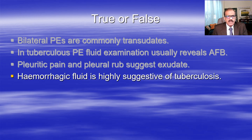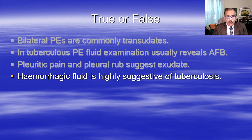Hemorrhagic fluid is highly suggestive of tuberculosis - true or false? No, this is not true. If there is frankly hemorrhagic fluid, I would suspect mostly malignancy, and maybe pulmonary infarction. Tuberculosis fluid is typically straw-colored.